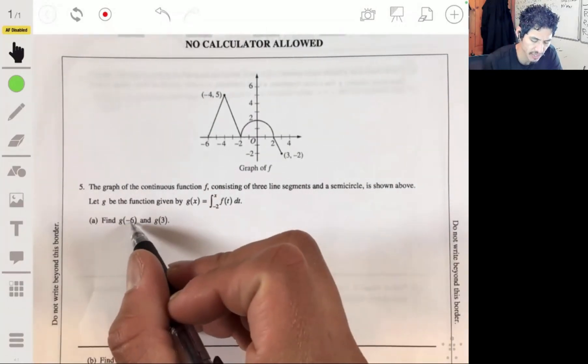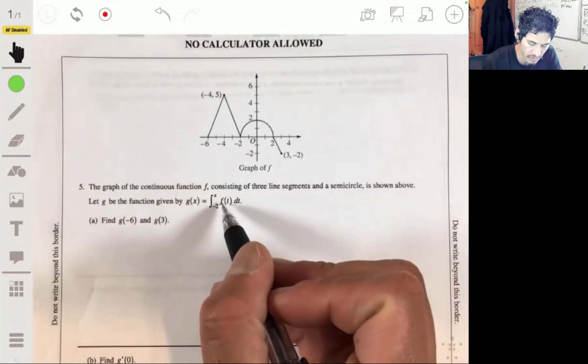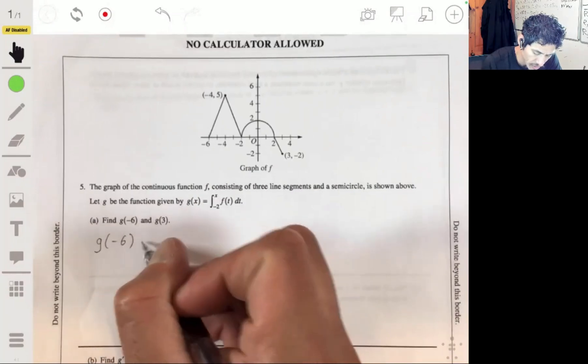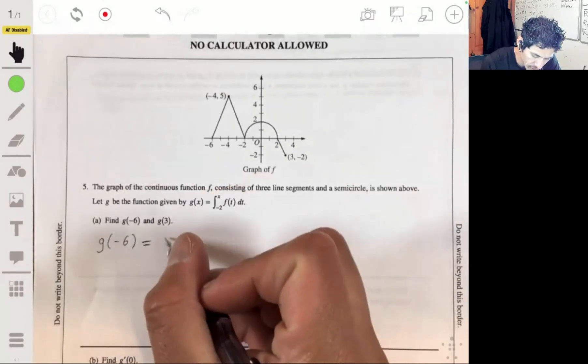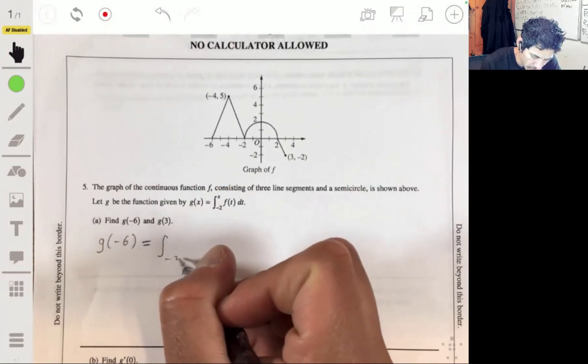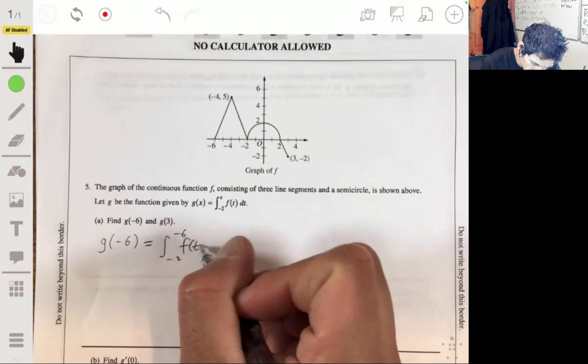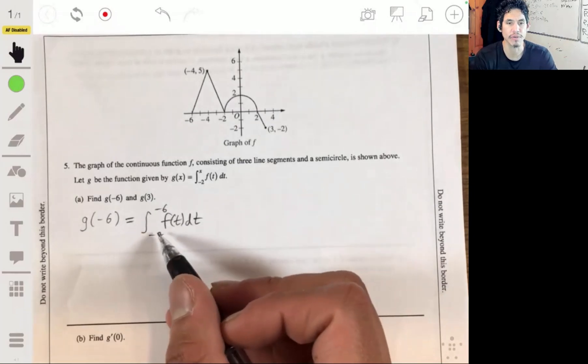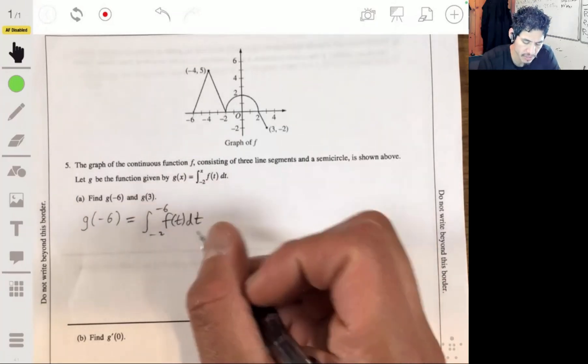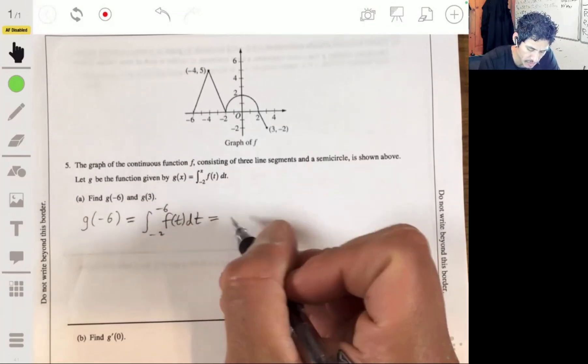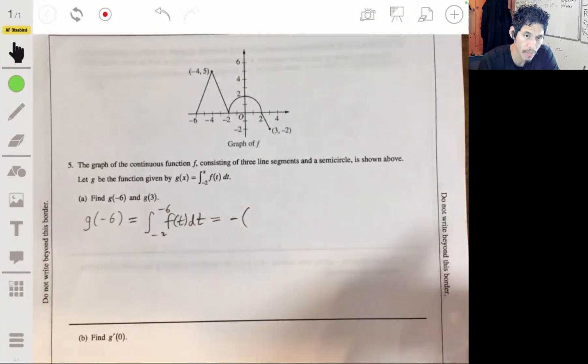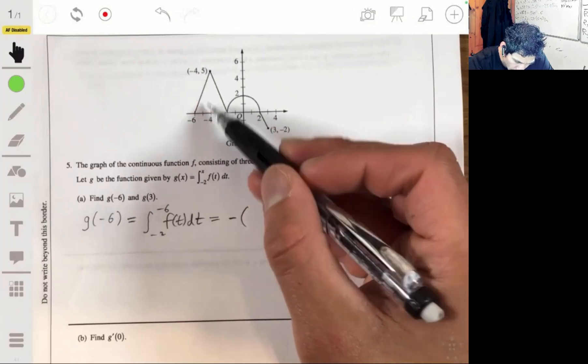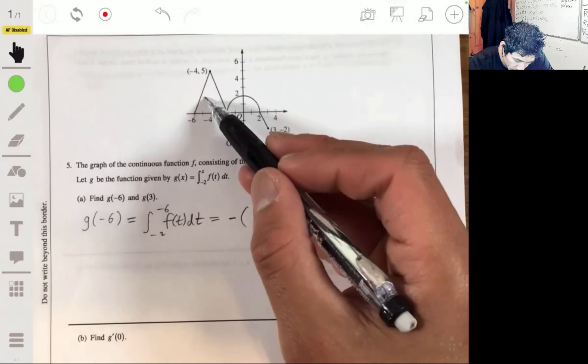For part one, we have to evaluate, find g of negative six and g of three. This is a graph of f, and we're told that g of x is equal to this integral. Let's find g of negative six. This will be equal to - we're going to just replace that x there with our negative six. It's essentially just finding this integral, and we have a picture of it, so we can find the area geometrically. Since the endpoints are going backwards, we multiply whatever our answer is by negative one. Going through this, we have this triangle here, 4 by 5, so 20 divided by 2, 10.